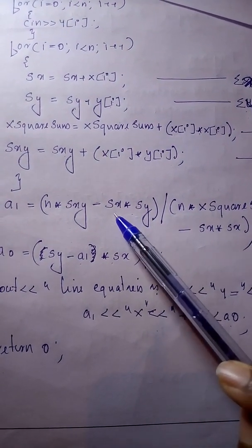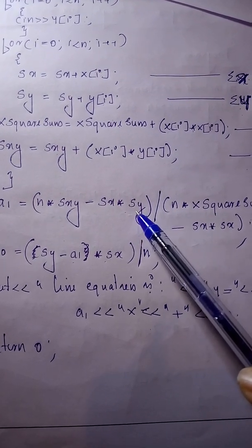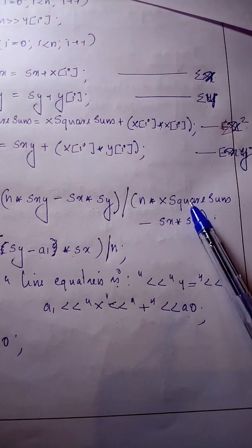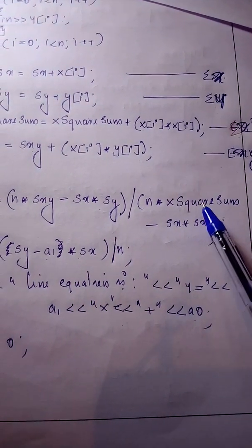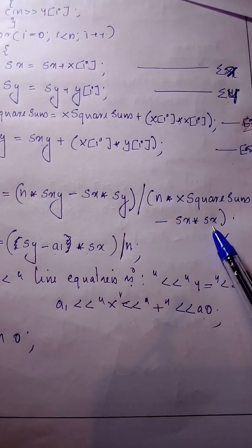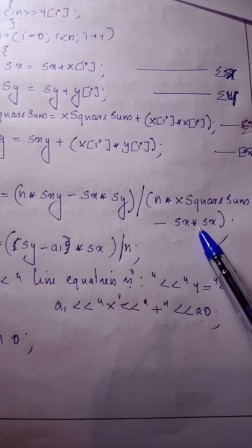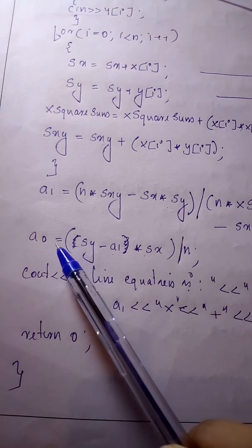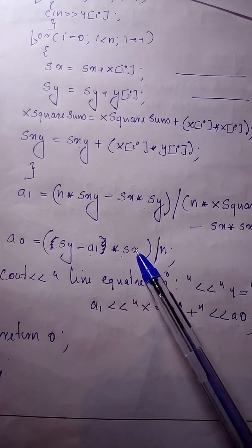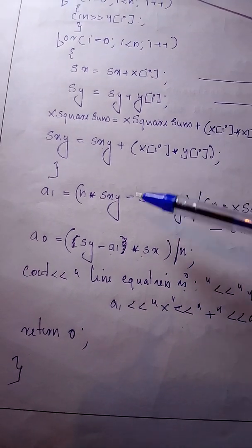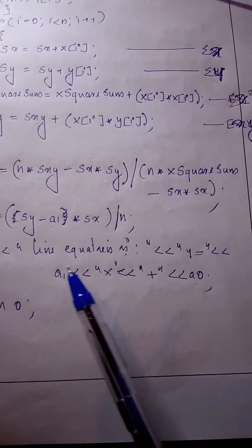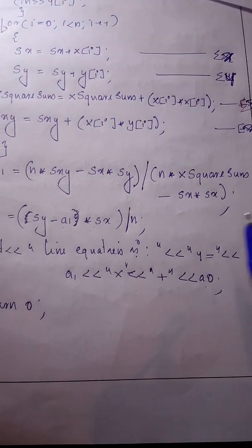A1 is calculated as n into sxy (sigma xy) minus sx (sigma x) into sy (sigma y), divided by n into sx square sum (sigma x square) minus sx into sx (sigma x whole square). Then a0 is equal to sy (sigma y) minus a1 into sx (sigma x), divided by n. Finally, the line equation y equal to a1 x plus a0 is displayed.